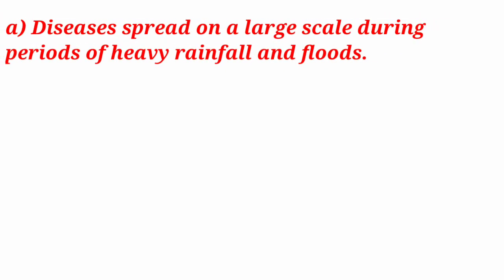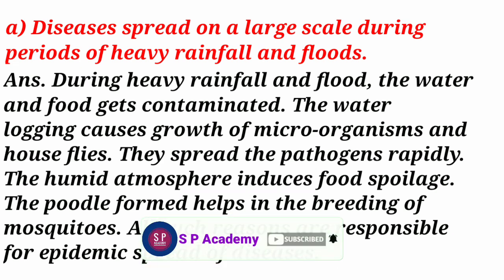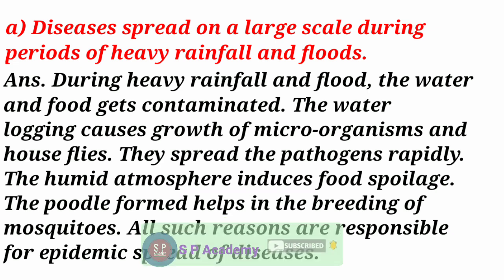Question 6. Give reasons. A. Diseases spread on a large scale during periods of heavy rainfall and floods. Answer: During heavy rainfall and floods, the water and food get contaminated. The water logging causes growth of microorganisms and house flies. They spread the pathogens rapidly. The humid atmosphere induces food spoilage. The puddle formed helps in the breeding of mosquitoes. All such reasons are responsible for epidemic spread of diseases.